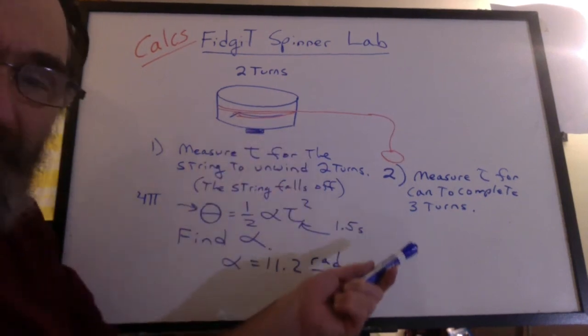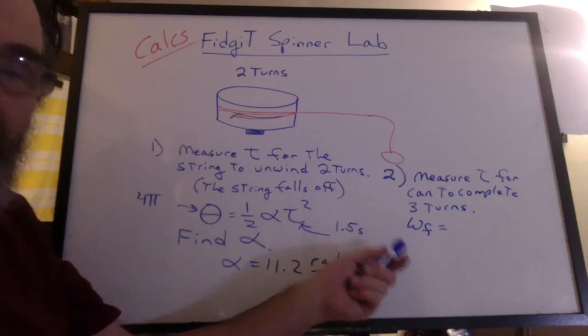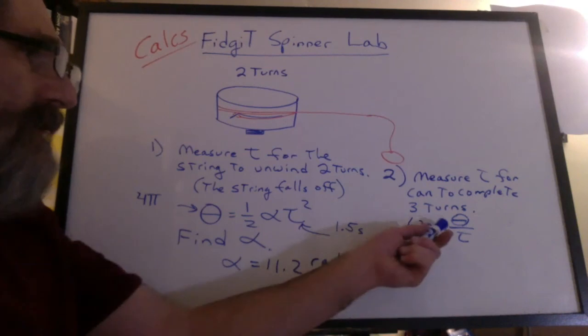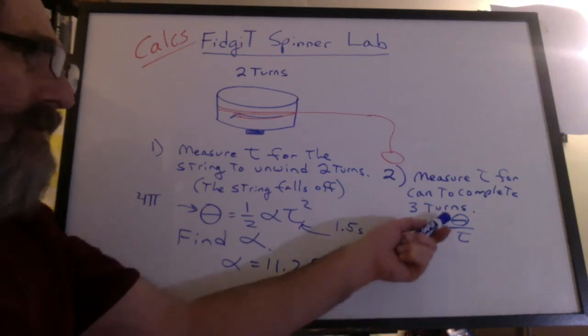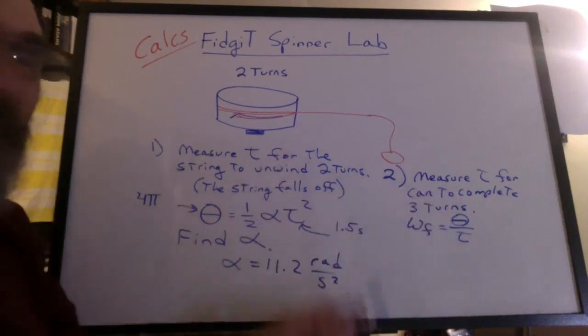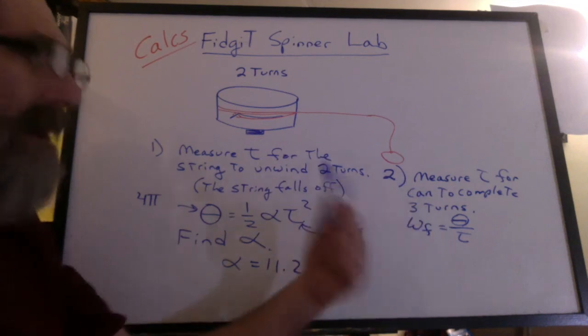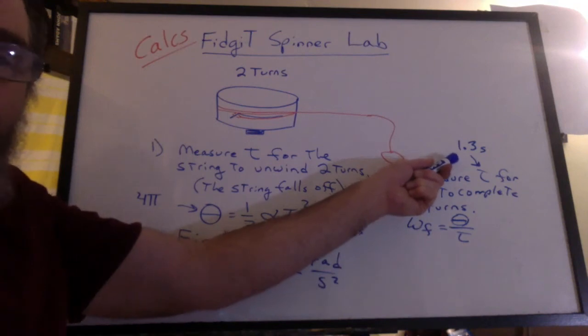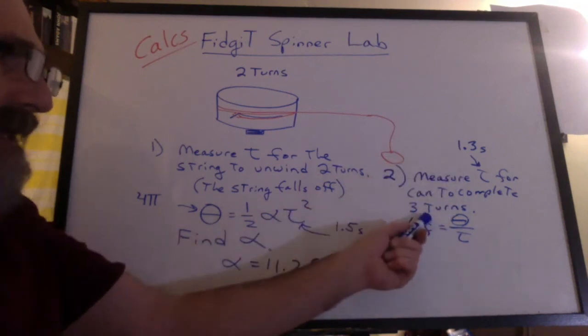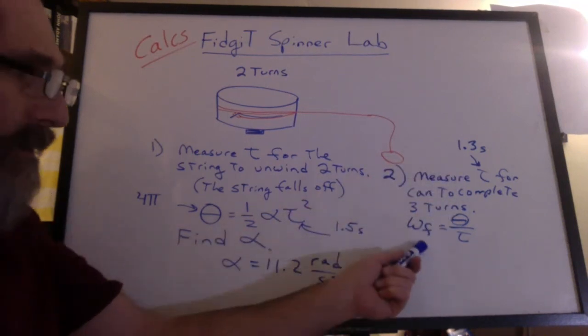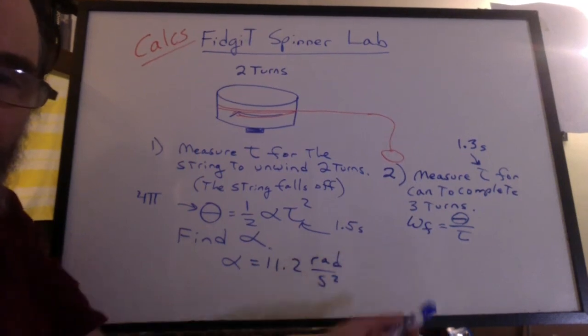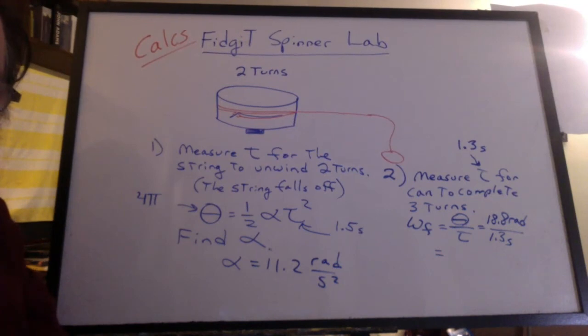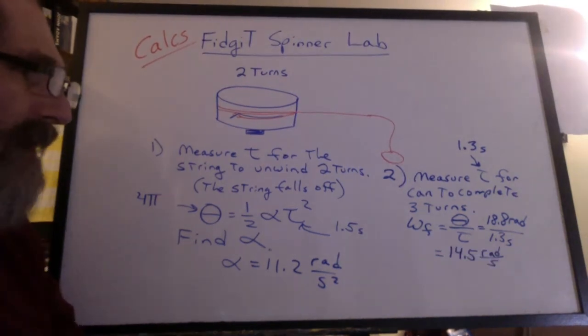So what do we want to find? The omega final. That's the maximum speed reached. So how do we find the final angular velocity? You can say it's theta per time. Well, this is the theta and the time after the weight's fallen off and we've reached this final and it's just spinning like this. Now, I didn't do the lab, but I'm going to make up a number that I think is reasonable: 1.3 seconds for it to make three turns. What's the final angular velocity? That's 18.8 radians in 1.3 seconds. That's 14.5 radians per second.